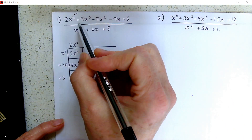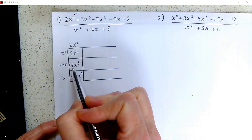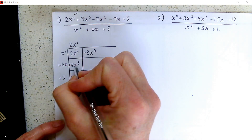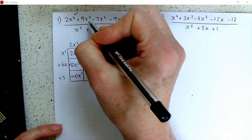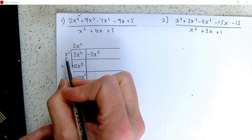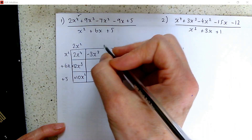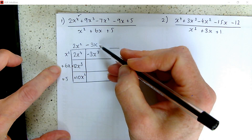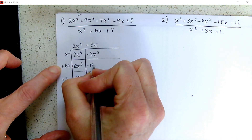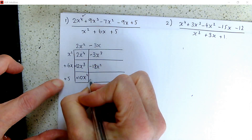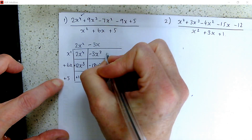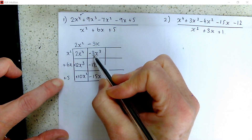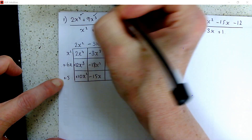We need a 9x cubed, but so far we've got 12x cubed. So we need to take away 3x cubed so that these add up to 9x cubed. We think: what do we multiply x squared by to make minus 3x cubed? Minus 3x. Then we fill in the other boxes by multiplying, so we get minus 18x squared and minus 15x. So we now have 12x cubed minus 3x cubed, which is the 9x cubed — so that's dealt with.